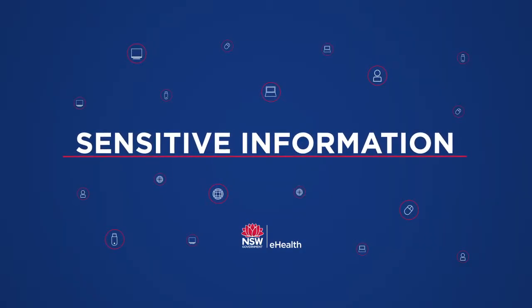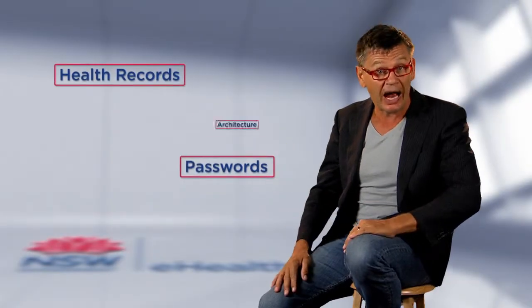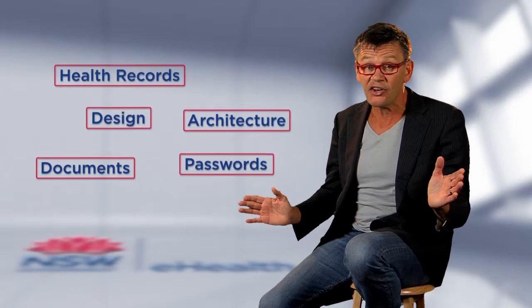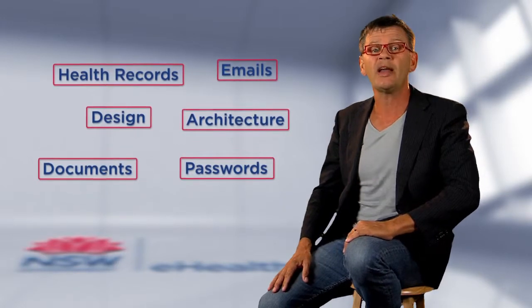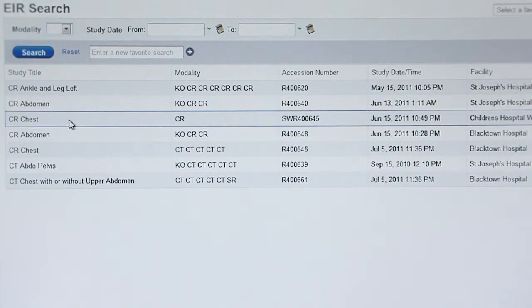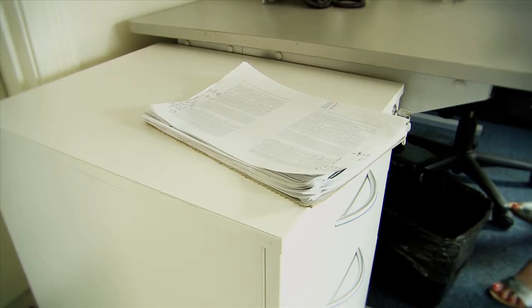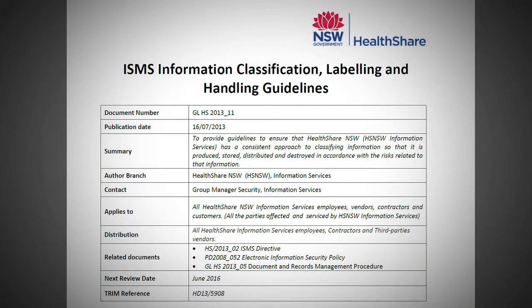The term sensitive information covers a broad spectrum and includes things such as health records, passwords, architecture, design and build documents, tender documents, emails, as well as any personal information. Much of the information we deal with is sensitive, and that means it should only be available to those who have a genuine business need. Always understand the sensitivity of the information you're working with, and if you are uncertain about it, ask your supervisor or refer to the information classification labelling and handling guidelines.